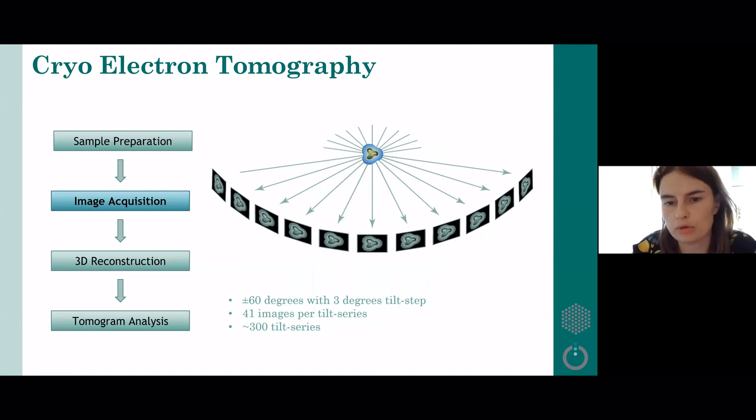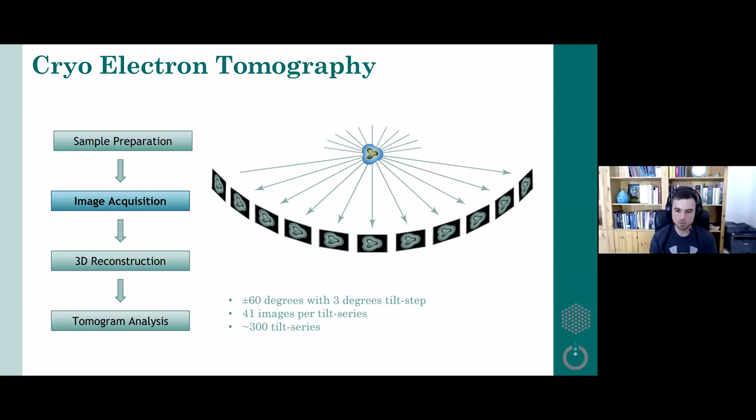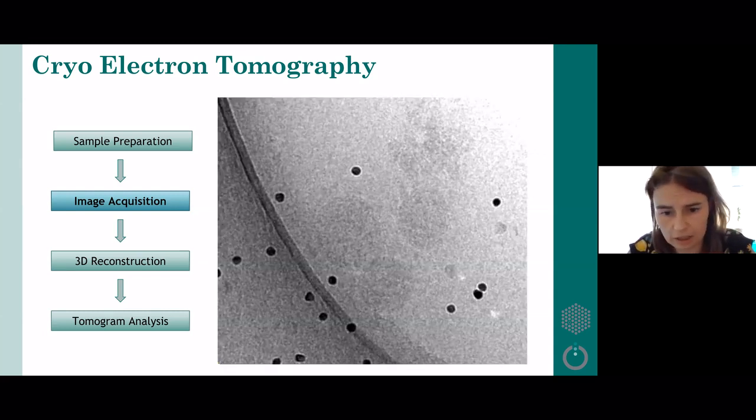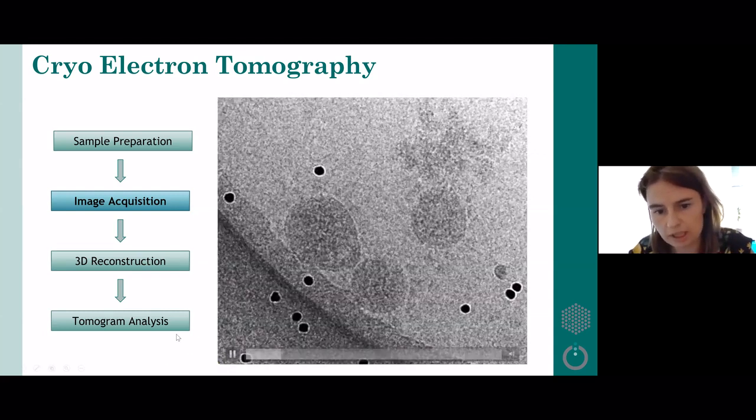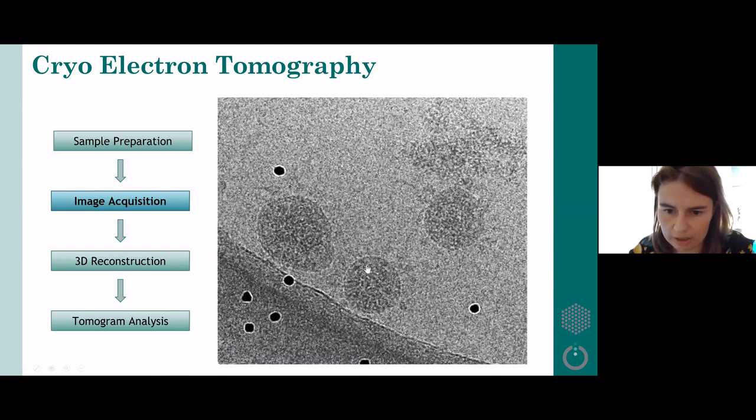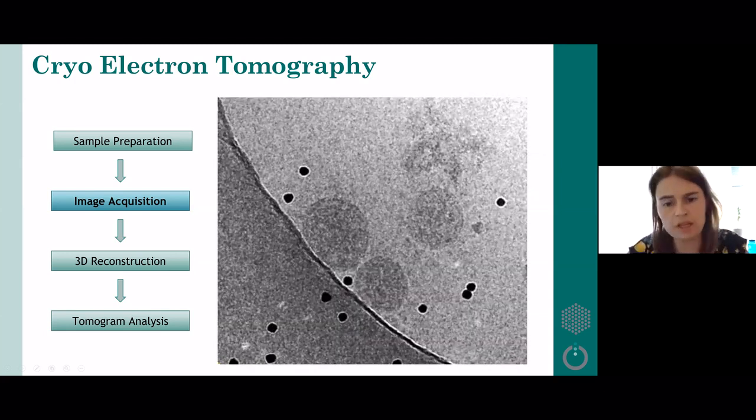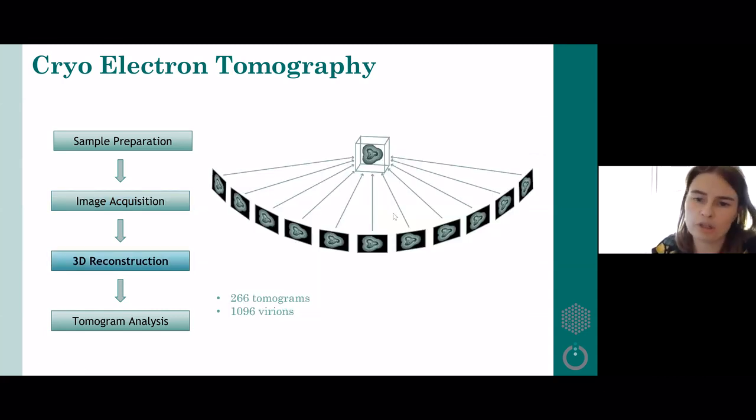In the case of SARS-CoV-2, we had 41 images in each tilt series spanning from plus minus 60 degrees and the tilt between each image was 3 degrees. We obtained 300 tilt series like that. Here is how it looks like. This goes from minus 60 to plus 60 degrees and you can see the virions and hints of the spikes already. Once we have this, we can use computational techniques to reconstruct the 3D model of our sample and this 3D model is called a tomogram.